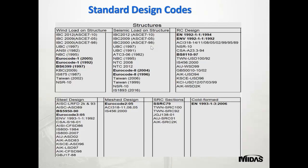On seismic load on structures, we have IBC (the American code), Euro code, and other international codes. The same applies to RC design — Euro code and BS code plus other international codes are embedded. For steel design, we have BS code, Euro code, and other international codes. The same applies to mesh design, steel reinforced concrete, and cold-form (light steel) — for which we have the Euro code as the design code.